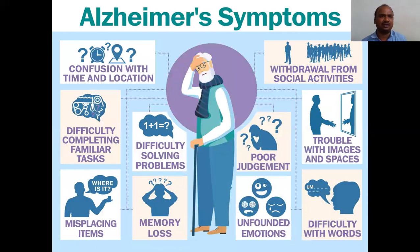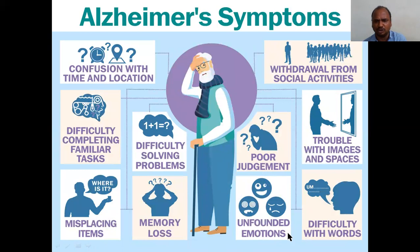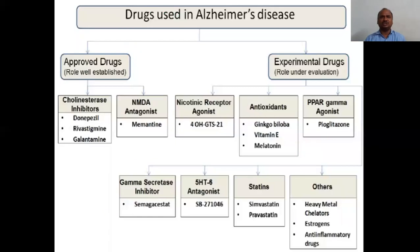Alzheimer's disease symptoms include: confusion with time and location — since there is memory loss, confusion automatically comes. Difficulty in completing familiar tasks. Misplacing items. Memory loss. Difficulty in solving various problems — that is why you should try to solve problems to keep your brain active. Poor judgment. Unfounded emotions. Difficulty with words. Trouble with images and spatial awareness. Withdrawal from social activities. These are the main symptoms, and they especially appear in old age.